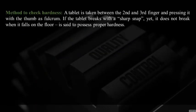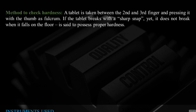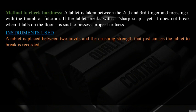A simple manual method to check hardness: a tablet is taken between the second and third finger and pressed with the thumb as a fulcrum. If the tablet breaks with a sharp snap yet does not break when it falls on the floor, it is said to possess proper hardness.